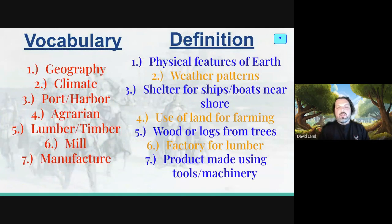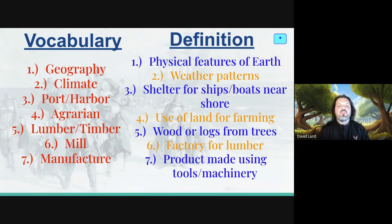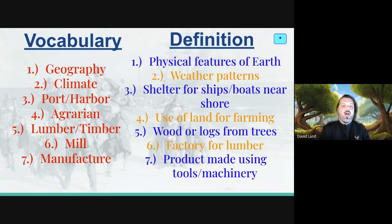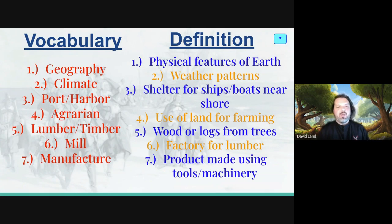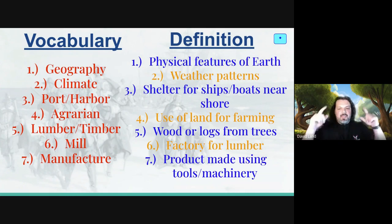We're going to start with our vocabulary from the lesson. Number one: geography. Number two: climate. Number three: port/harbor. Number four: agrarian. Number five: lumber or timber. Number six: mill. Number seven: manufacturer. Hit that pause button and get them now.